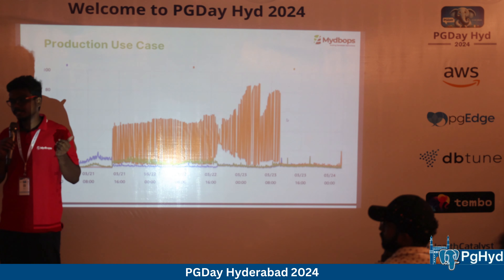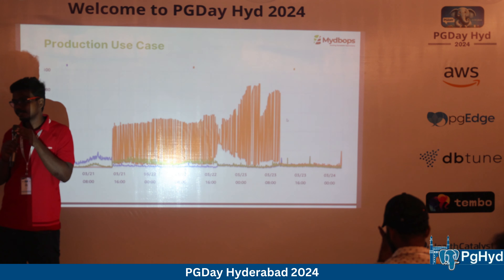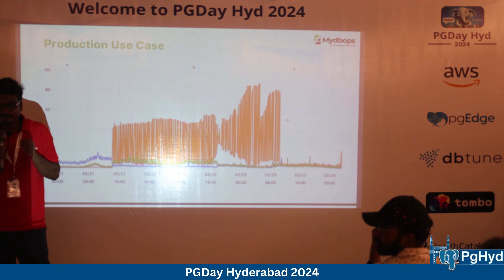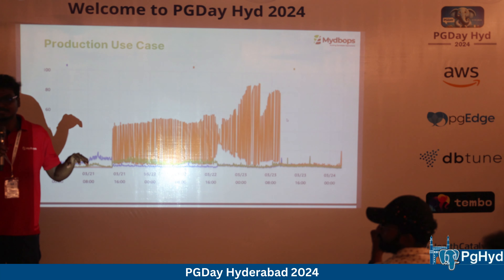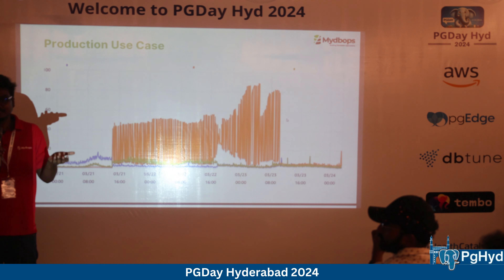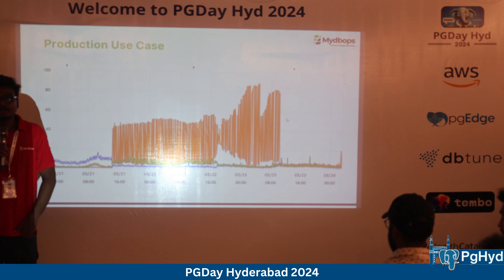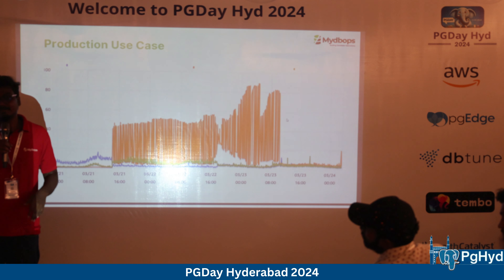Once we identified the root cause, we proposed solutions to the customer. Since they couldn't reduce the number of applications, we recommended either AWS RDS Proxy or PG Bouncer. They chose PG Bouncer. Before: all applications were directly hitting the database, causing thousands of connections. After implementing PG Bouncer, we updated the DNS to point all application connections through PG Bouncer, with only a limited number of active connections reaching the database. The CPU spike dropped immediately.